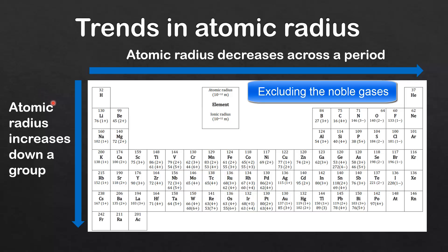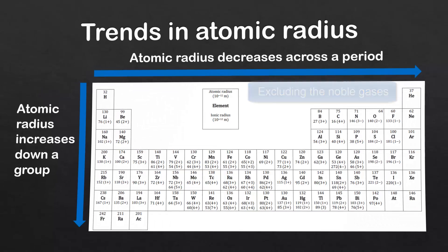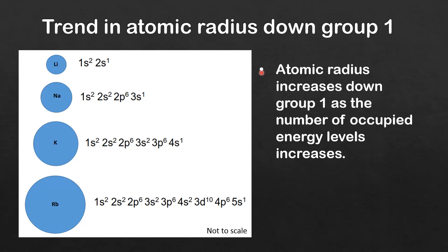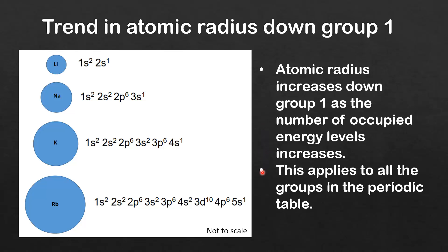Next we'll look at the reason for the increase in atomic radius as you go down a group. Here we have the first four elements in group 1: lithium, sodium, potassium, and rubidium. As you go down the group the atomic radius is increasing, and the electronic configurations show the reason. Lithium has 2 occupied energy levels, sodium has 3, potassium has 4, and rubidium has 5. So atomic radius increases down group 1 as the number of occupied energy levels increases. This applies to all groups — as you go down a group the number of occupied energy levels increases and so does the atomic radius.